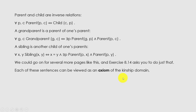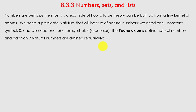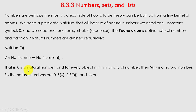Next are numbers, sets, and lists. Numbers are perhaps the most vivid example of how a large theory can be built from a tiny kernel of axioms. We need one predicate NatNum that will be true of natural numbers, one constant symbol 0, and one function symbol S (successor). The Peano axioms define natural numbers and addition recursively: NatNum(0) (zero is a natural number), and for every object n, if NatNum(n) then NatNum(S(n)). So the natural numbers are 0, S(0), S(S(0)), and so on.